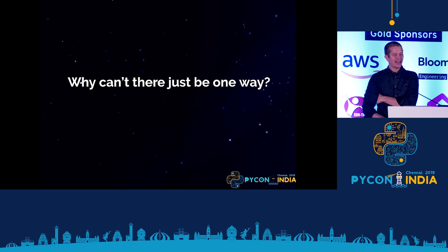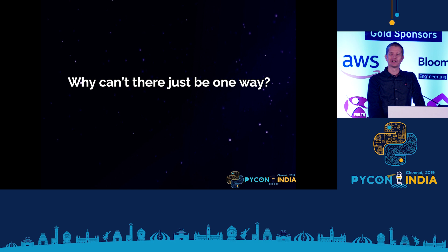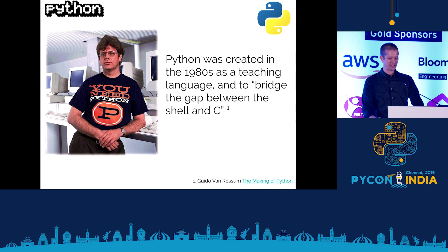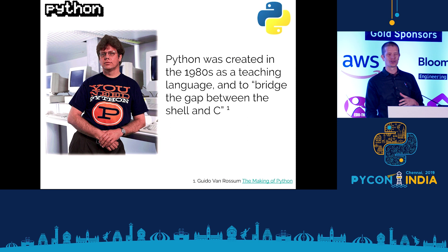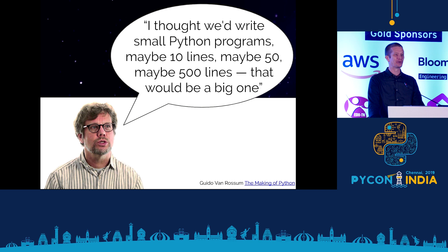Why can't there just be one way? It comes down to the fact that Python didn't start as a data science tool — it wasn't designed as a data science tool, or even a numerical or statistical computing tool at all. If you rewind the clock almost 40 years and go back to the beginning of Python, this is Guido Van Rossum, and he created Python basically as a teaching language and to bridge the gap between the shell and C. Python was designed to be kind of an alternative to bash coding.